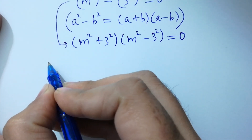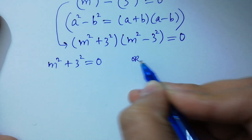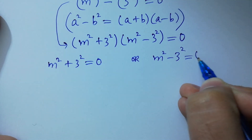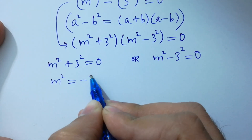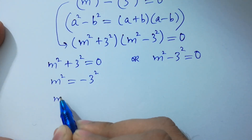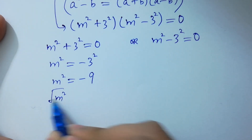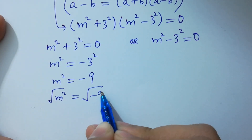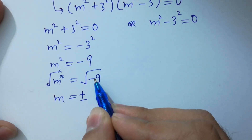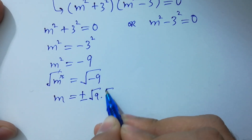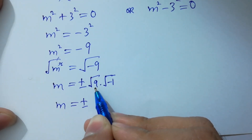Either m squared plus 3 squared equals 0 or m squared minus 3 squared equals 0. From the first case, m squared equals minus 9. Taking the square root on both sides, m equals plus or minus the square root of 9 times the square root of minus 1, which is plus or minus 3i.